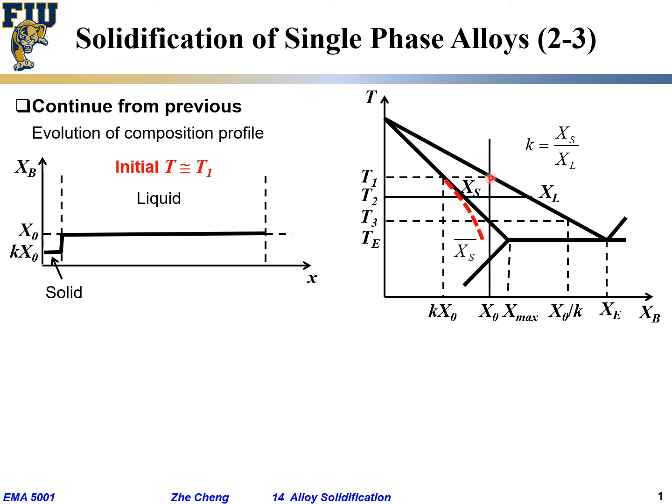When we are just barely below this T1, I have very little solid, and the solid composition is kx0. Remember we define k as xs over xl, k is always smaller than 1 or greater than 1, in this case smaller than 1. kx0, what is x0? My system overall composition, which also at that moment is my liquid. Remember this side is liquid, liquid composition. When we are just barely below here, what's your liquid composition? The intercept with the phase boundary is pretty much x0. x0 in the liquid, solid here. Make sense? A little bit of solid.